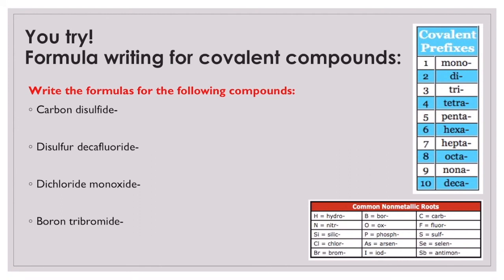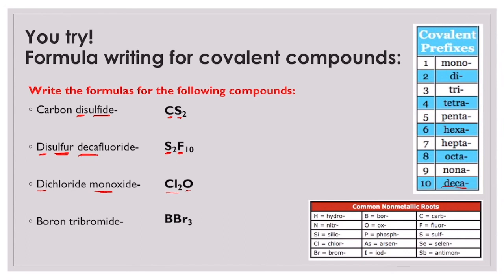Hopefully you had an opportunity to try those. Let's look at the answers. Carbon disulfide: just one carbon and two sulfur atoms - CS2. Disulfur decafluoride: two sulfur atoms and 'deca' is the prefix for ten, so ten fluorine atoms - S2F10. Dichlorine monoxide: two chlorine atoms and just one oxygen - Cl2O. Remember we don't double up our O's there. And boron tribromide: boron, then 'tri' is three, and 'brom' is the non-metallic root for bromine, so three bromine atoms - BBr3.